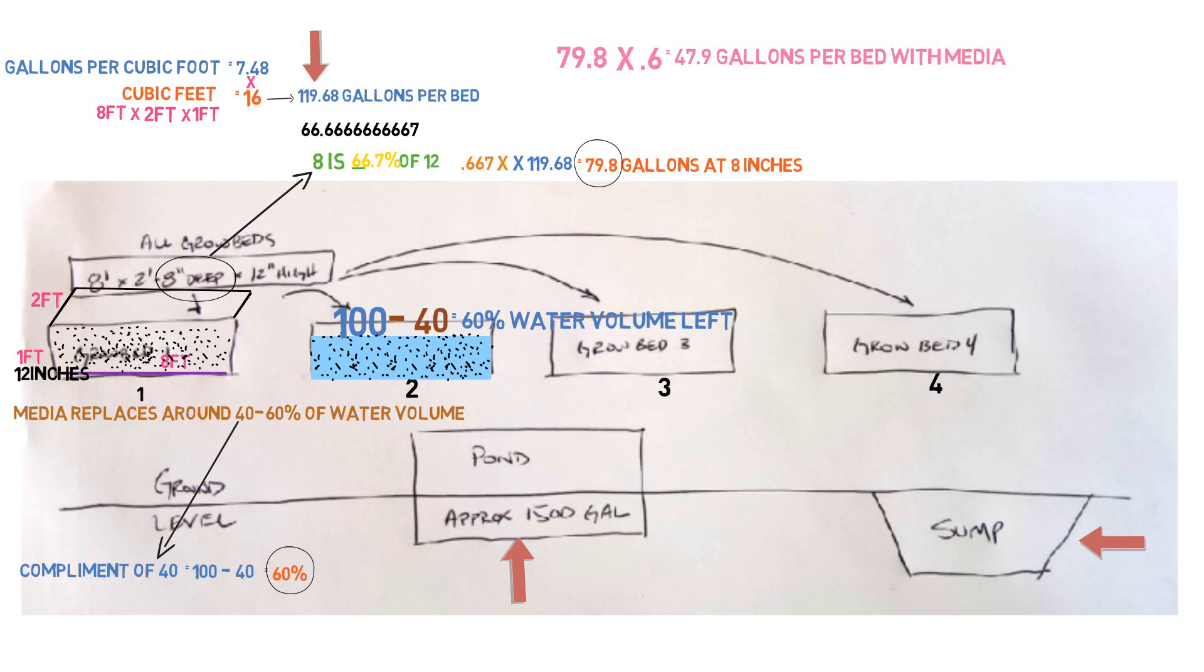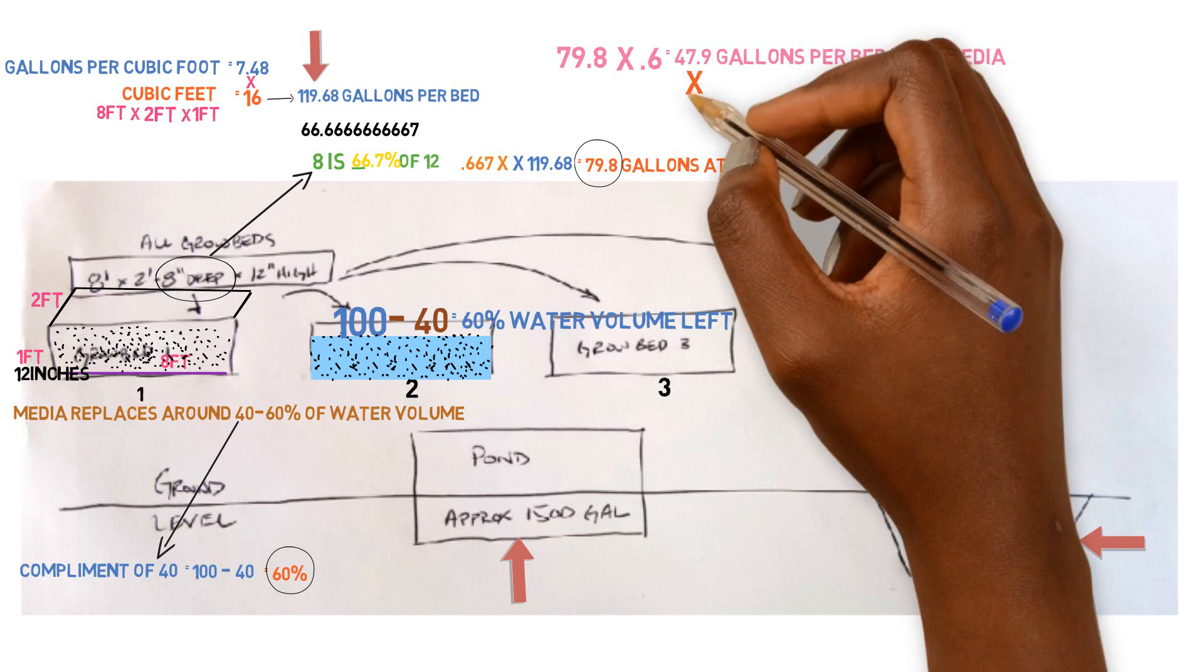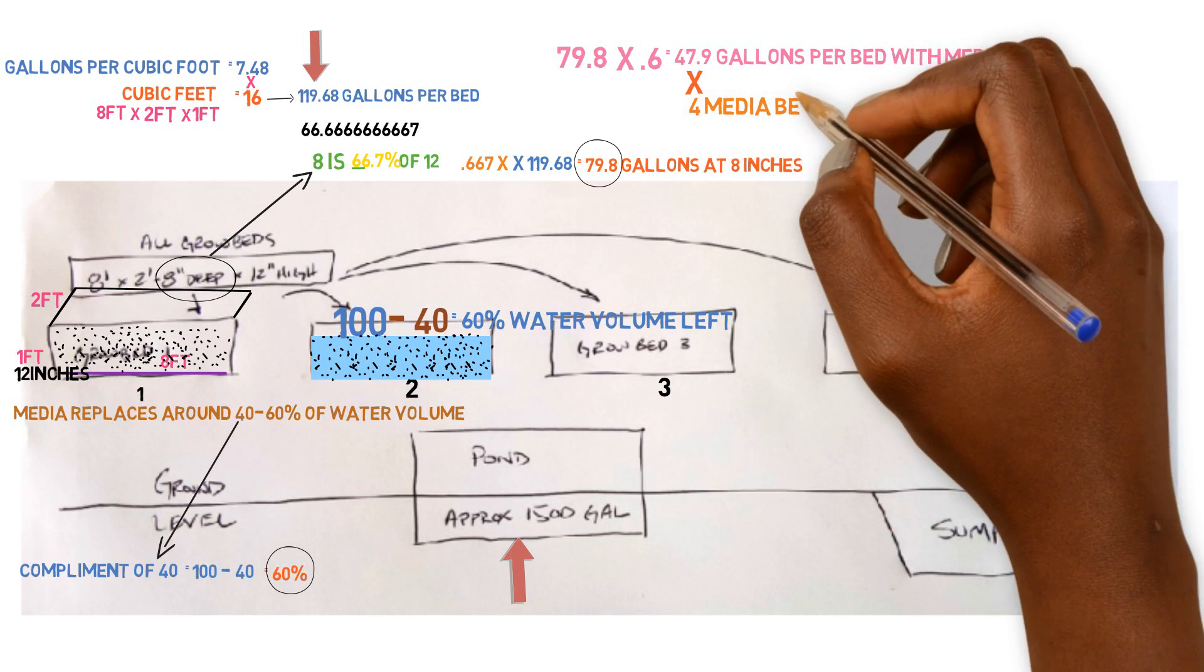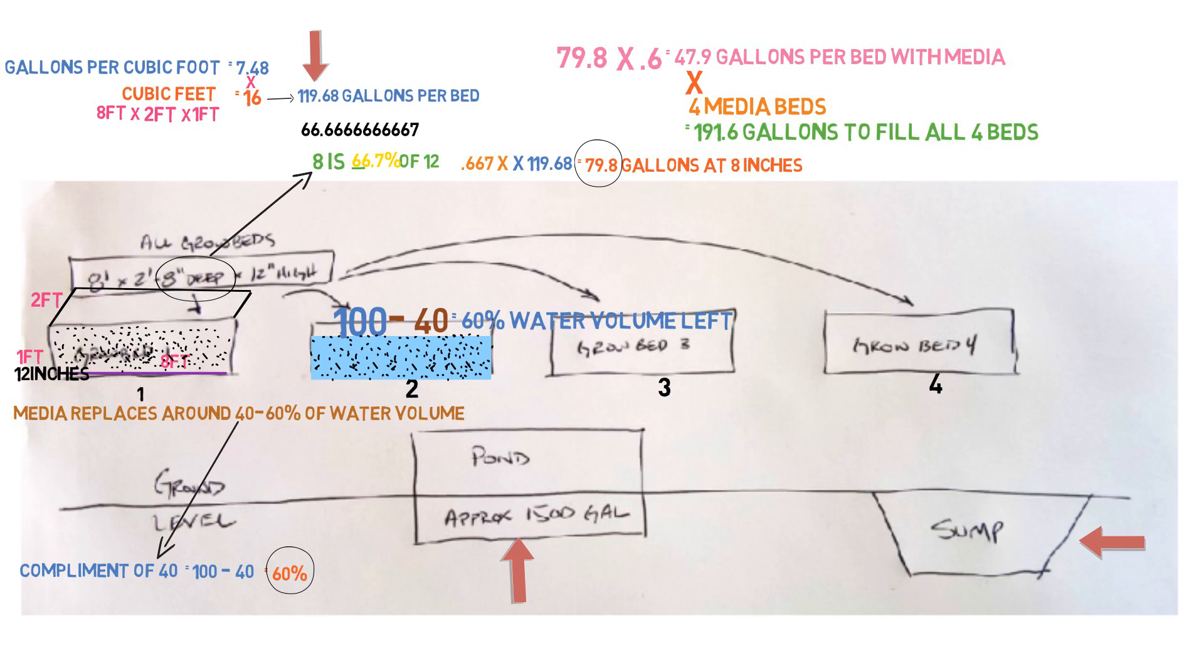Now, in order to find out the calculation of how much sump tank we need, we need to add all of these together, each one of the beds up. So 47.9 times the amount of media beds that we have, which is four. And that's going to give us a total of 191.6 gallons total to fill up all of these beds when they're fully occupied with the media and at eight inches.